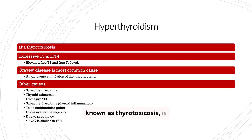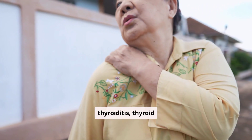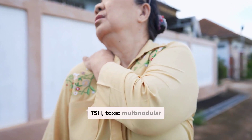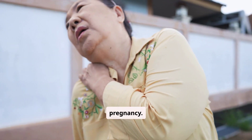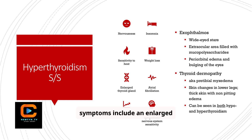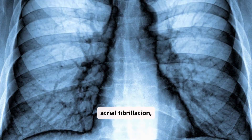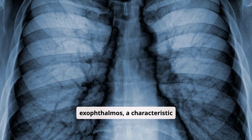Hyperthyroidism, also known as thyrotoxicosis, is characterized by excessive T3 and T4 levels. Graves' disease, an autoimmune disorder, is the most common cause. Other causes include thyroiditis, thyroid adenoma, excessive TSH, toxic multinodular goiter, excessive iodine ingestion, and pregnancy. Symptoms include nervousness, insomnia, sensitivity to heat, and weight loss. Other symptoms include an enlarged thyroid gland, atrial fibrillation, increased heart rate, and exophthalmos, a characteristic bulging of the eyes.